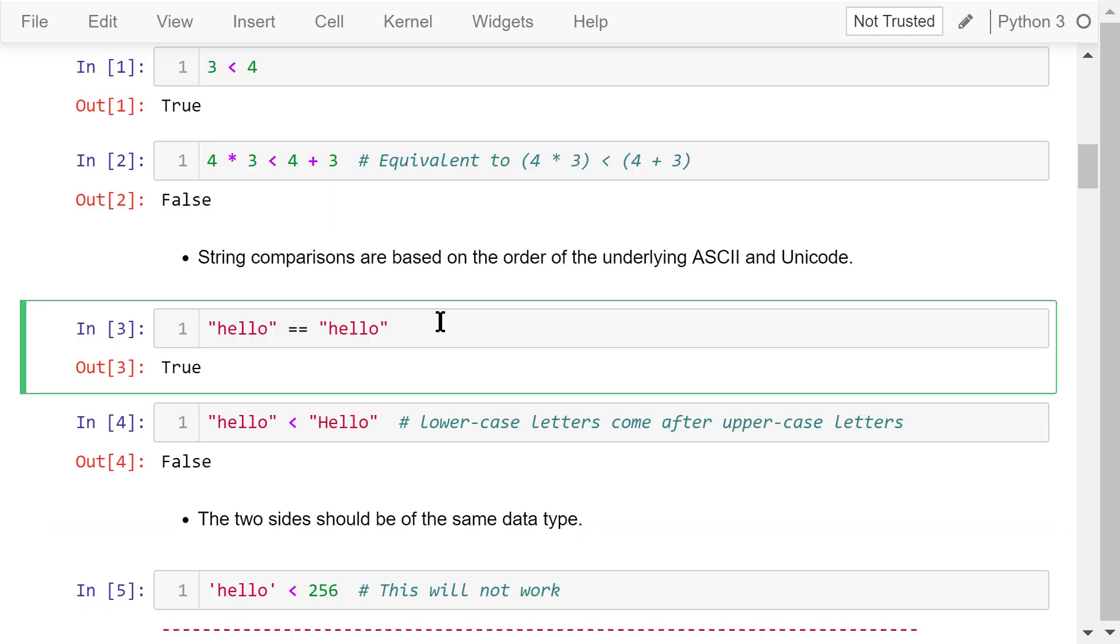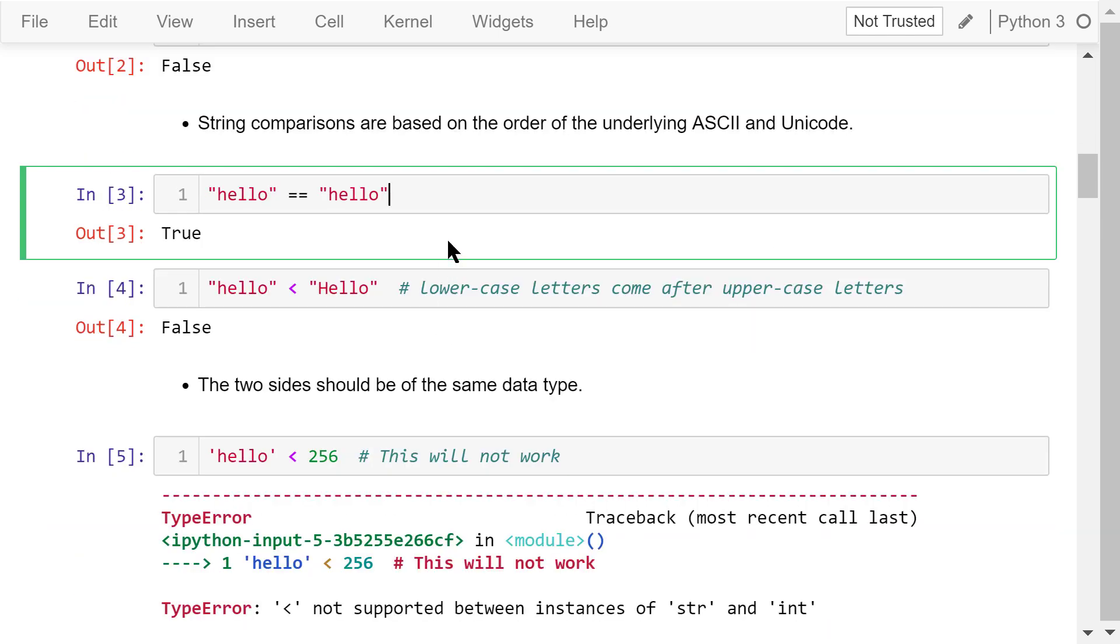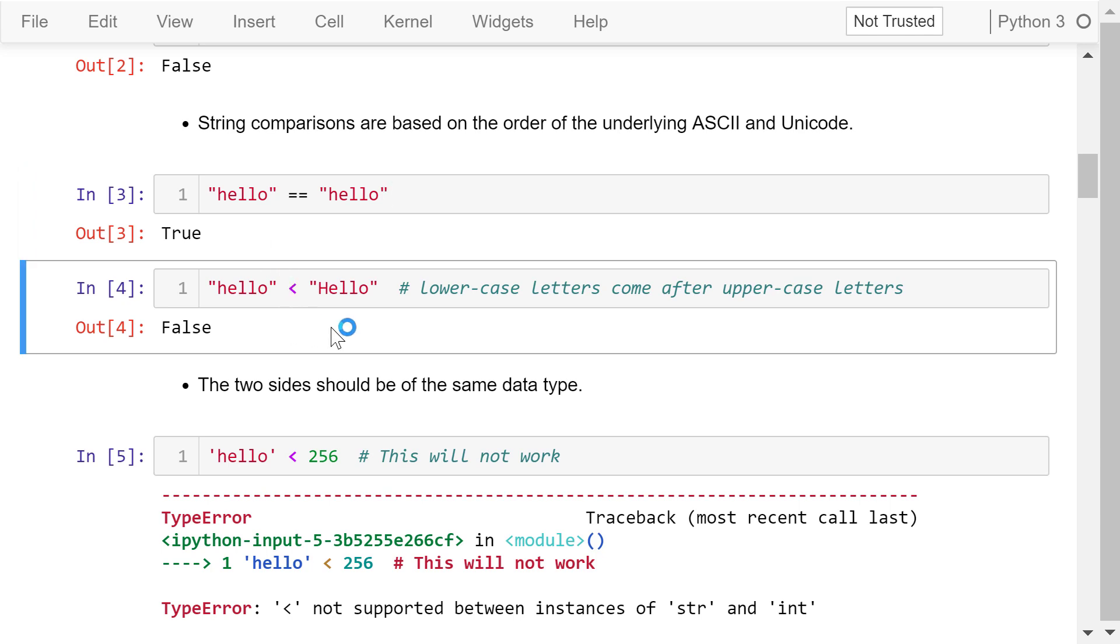These are number comparisons. String comparisons are based on the order of the underlying ASCII and Unicode. I already talked about the ASCII code in another video in this course titled String Encoding and Formatting. Here is an example. Is hello equal to hello? They are exactly the same, so the answer is true. Is hello less than this hello with the capital letter H? Because lowercase letters come after uppercase letters in the ASCII table, the answer to this question is false.